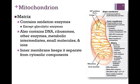The most internal part of the mitochondria is the matrix, internal to the inner membrane. It contains oxidation enzymes, except of course glycolytic enzymes, which would be present in the cytosol. It also contains DNA molecules, ribosomes, other enzymes, metabolic intermediates, as well as small molecules and ions. The inner membrane is a very effective barrier, and it keeps separate the matrix from the cytosolic components.